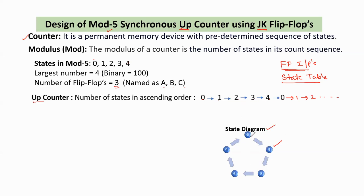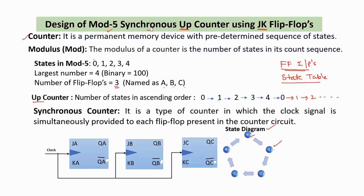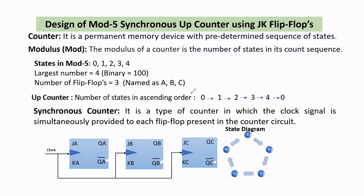The starting state should be 0, then 1, 2, 3, 4, and after 4 it goes back to 0. Now we should discuss the synchronous counter. A synchronous counter means the counter has a group of flip-flops interconnected with each other. For all these flip-flops, when we apply the clock pulse simultaneously, that type of counter circuit is called a synchronous counter.